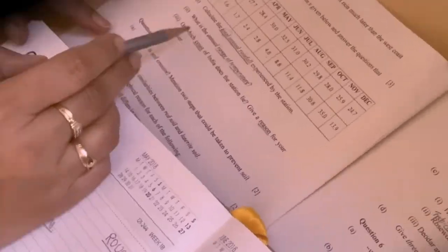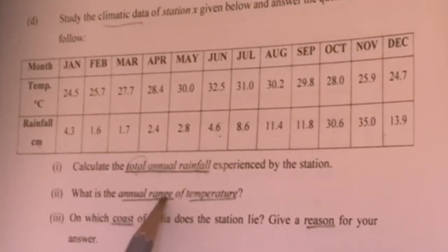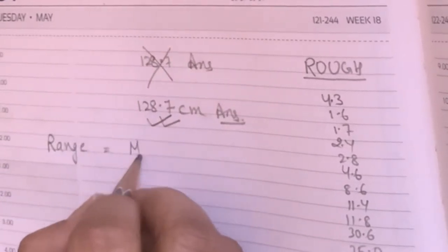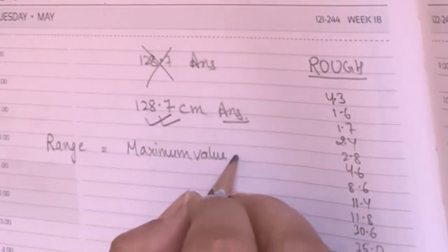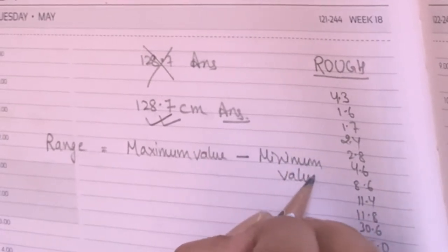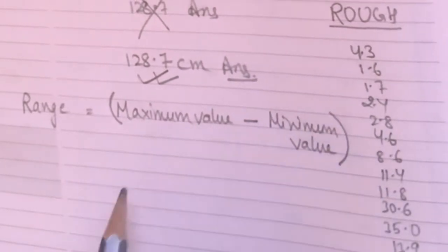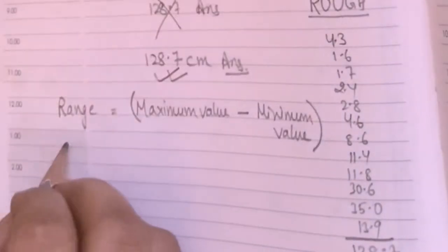Let's go to the next question: what is the annual range? If the word 'range' is there, then you will write maximum value minus minimum value — only this subtraction you have to do. Here they are asking for the range of temperature, so next you will write the temperature range.